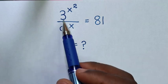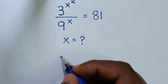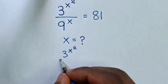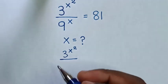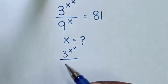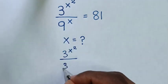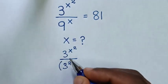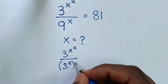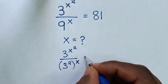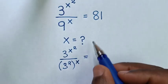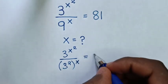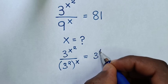Now from here, in the numerator which is 3 power of x square, then over 9 is the same as 3 square, bracket power of x, is equal to 81 which is the same as 3 power of 4.